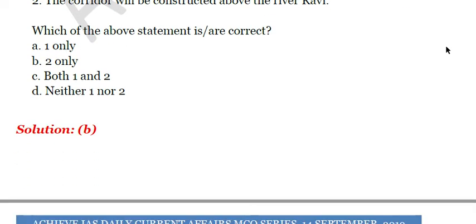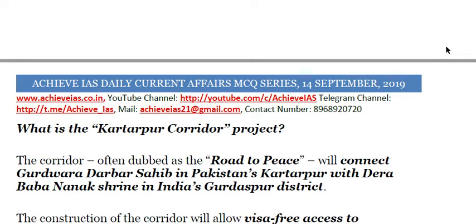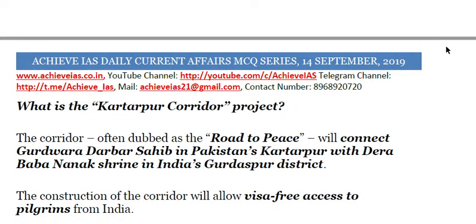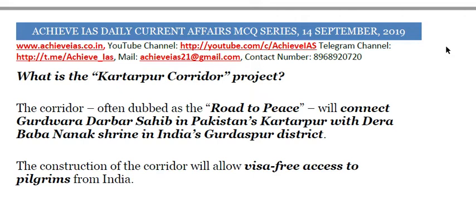The second statement is correct — yes, the corridor will be constructed above the river Ravi. So the answer is B, second only. The Kartarpur Sahib corridor is also dubbed the 'road to peace.' It will connect Gurdwara Darbar Sahib in Pakistan's Kartarpur with Dera Baba Nanak shrine in India's Gurdaspur district. There are actually two Gurdwaras named Darbar Sahib — one in Pakistan and one in Amritsar, also famous as the Golden Temple.